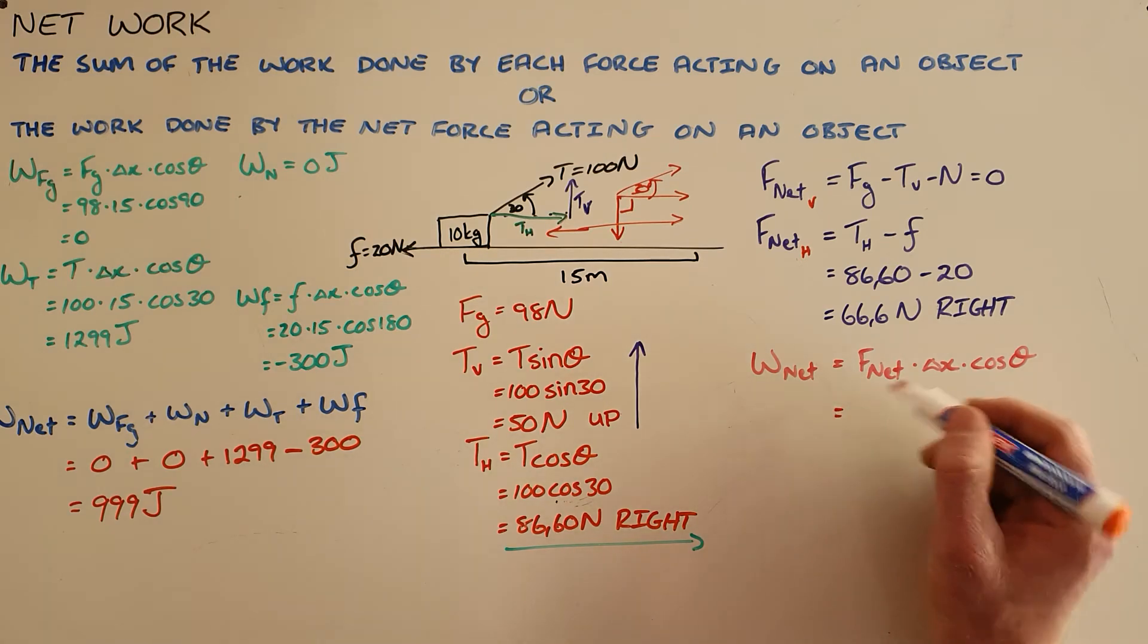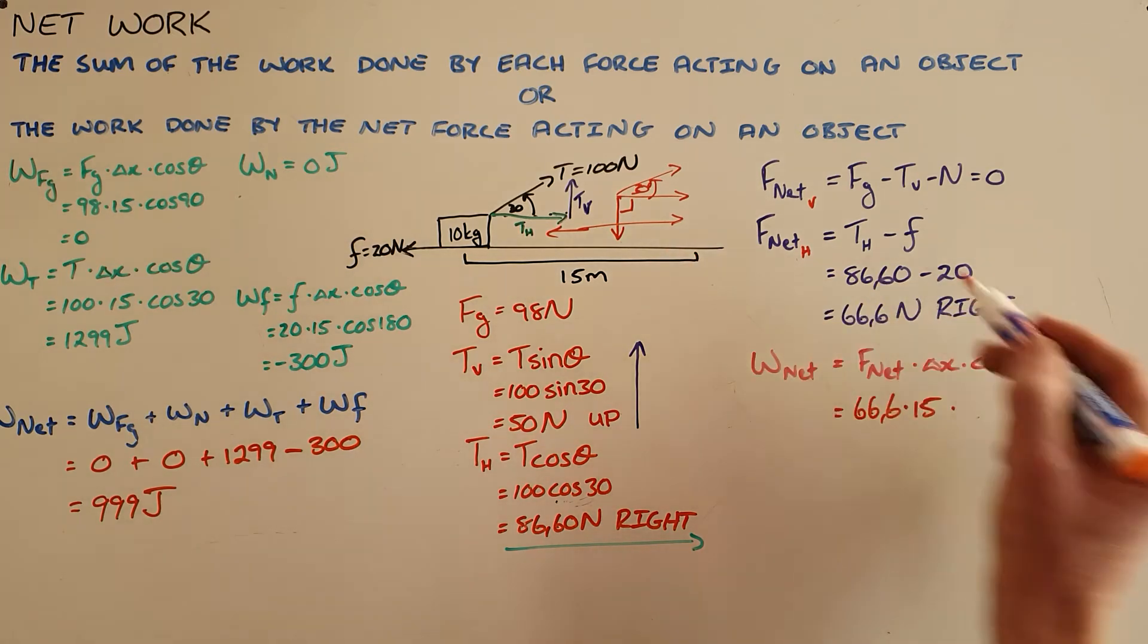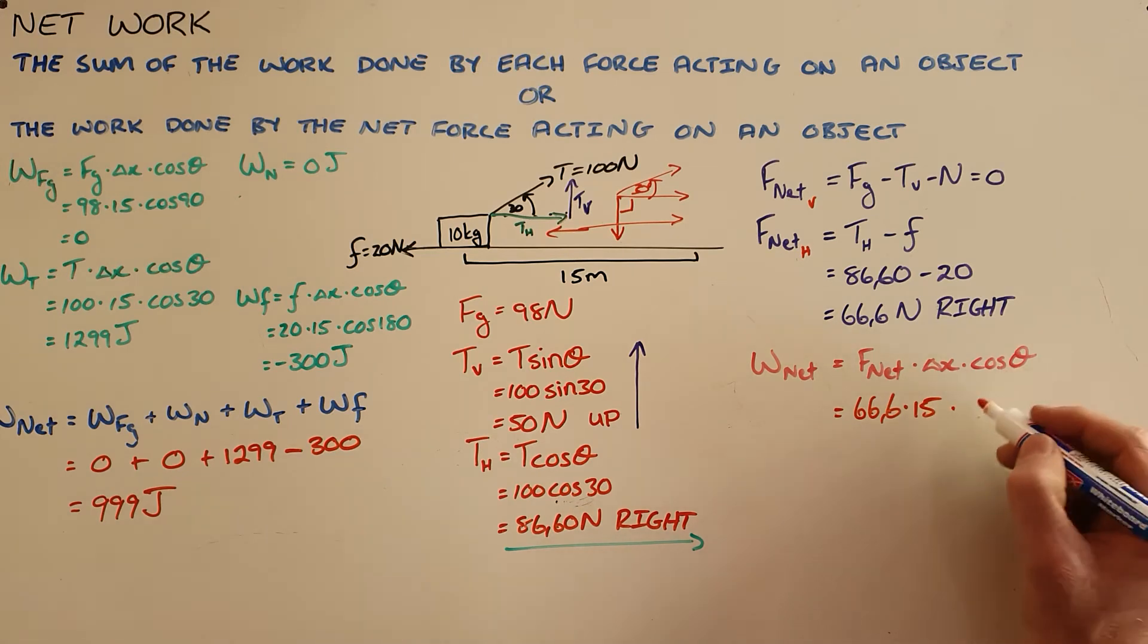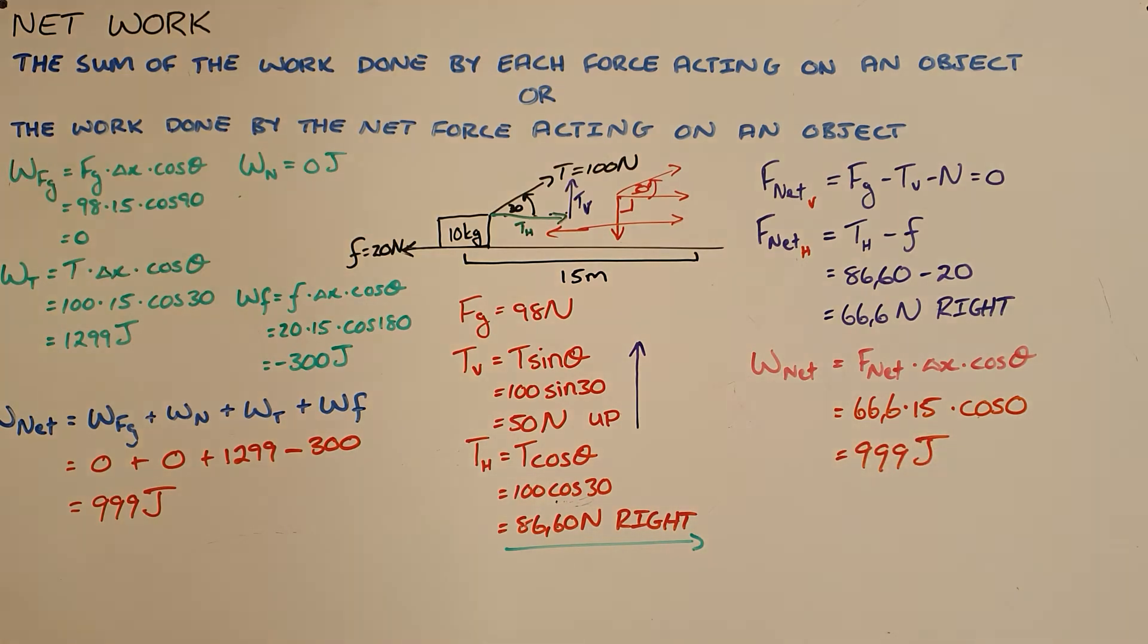So we can calculate the net work done on this object then by taking that net force, 66.6, multiplying it by the displacement of 15. The net force acts to the right as well as the displacement which is to the right, so it is cosine of zero. That would then give us exactly that same net work done on the object.